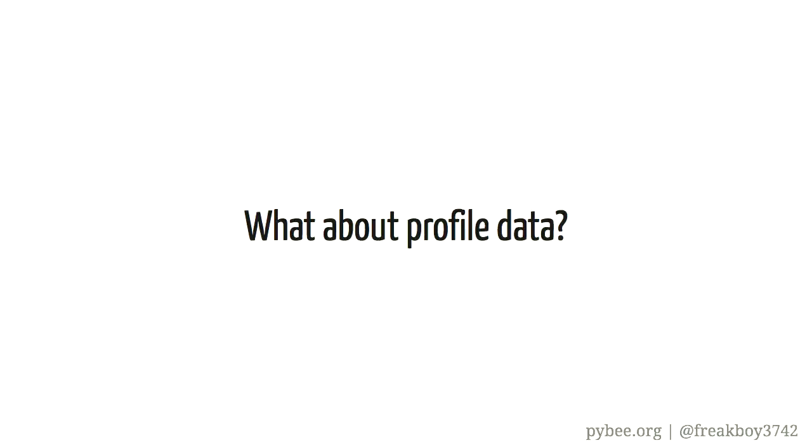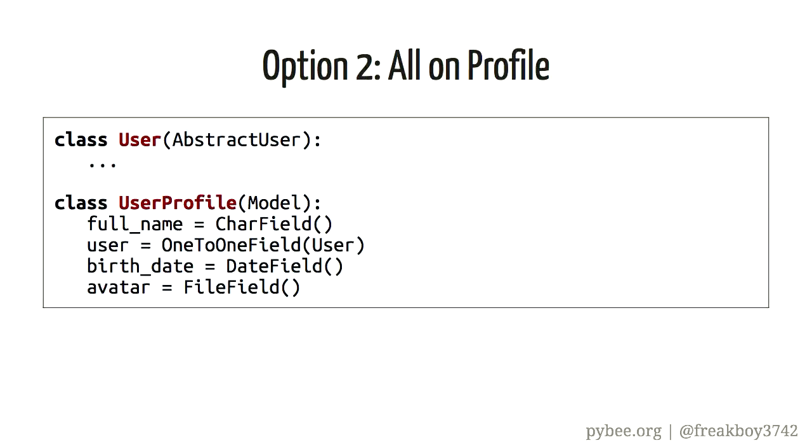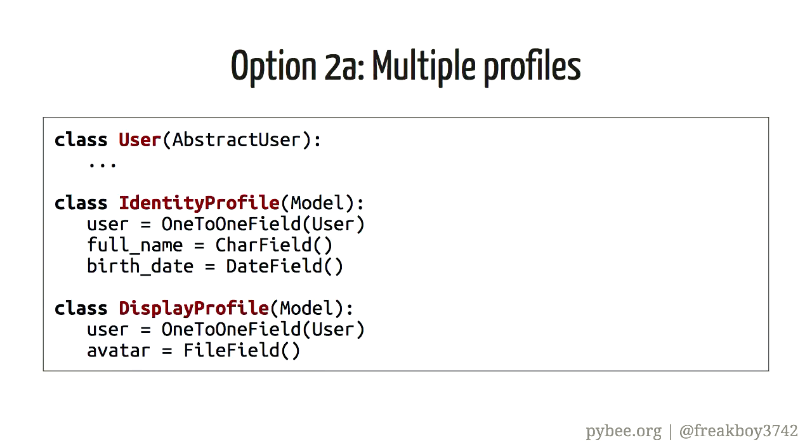One of the driving forces behind custom user models was the desire to have custom profile data — any user-specific information you might want to track about the user. There are really three options: put everything on the user model and don't have a profile at all; keep the user model to a bare minimum and put everything else onto a profile model linked one-to-one with the user; or a hybrid. The benefit of splitting out profiles becomes clearest at the extreme: each pluggable application can then introduce its own profile model containing only the bits about the profile that it cares about.